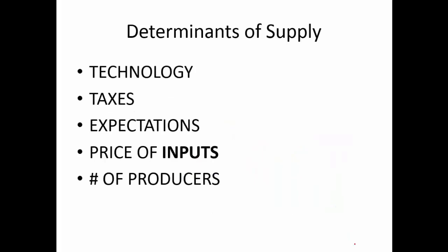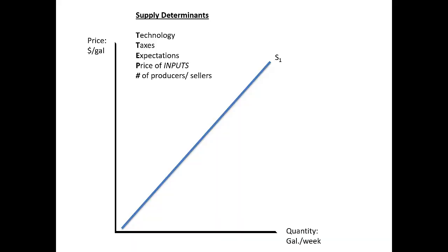Okay, so to summarize the determinants of supply: technology, taxes, expectations, price of inputs, number of producers. You can use a similar acronym here — T-TEP-N — as a way to help you remember the categories for determinants of supply.